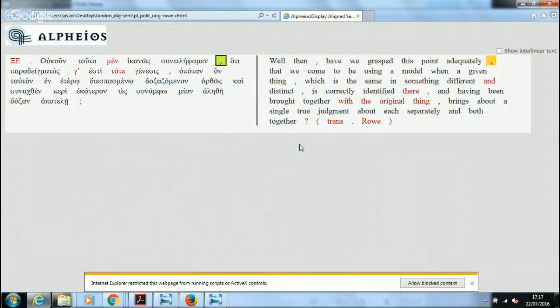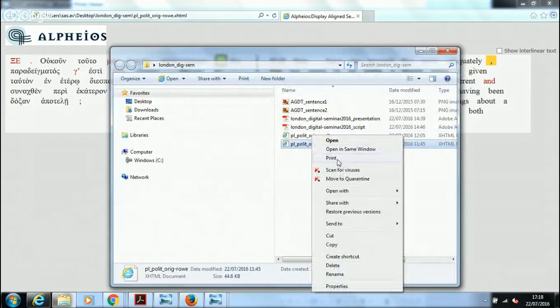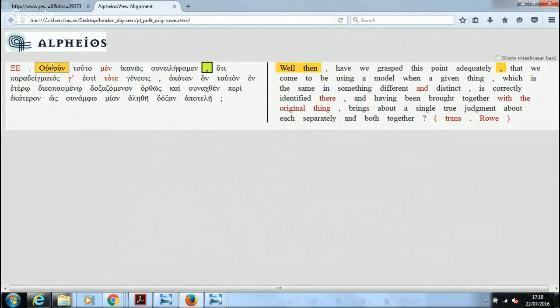Now, what you see here is an export format from the tool itself. The tool presents now, we have annotated the text, we went word for word, and we tried to see how the translator, where Christopher Rowe is much more than a translator of the Politicos, because he's a very important interpreter of the dialogue. He has written an excellent, concise commentary in Aris and Phillips. What we have done here was to try to map the English translation on the Greek original.